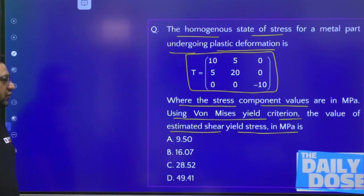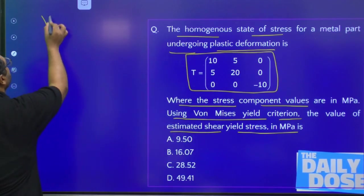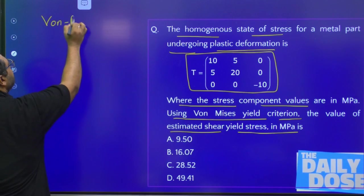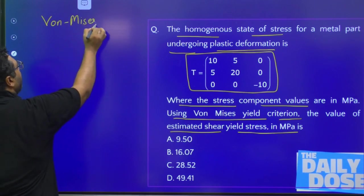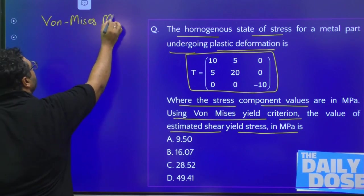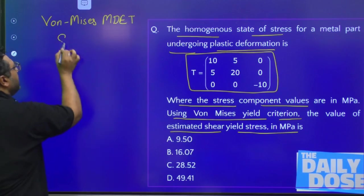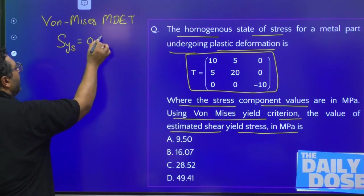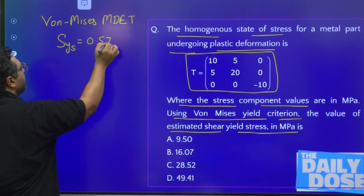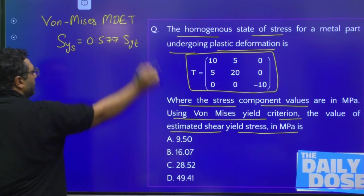First of all, you must be aware that when we are talking about Von Mises's theory of failure, that is nothing but MDET. According to this theory, we know that the shear yield strength is equal to 0.577 times the yield strength in tension.